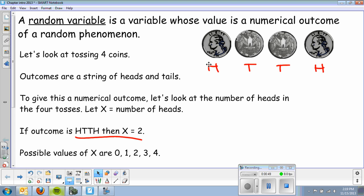The possible values of X are zero for no heads, one for one head, two, three, four, etc.